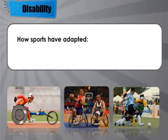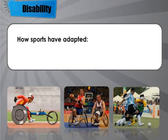Blind football has had its equipment adapted. All players wear blindfolds to ensure a level playing field, so that someone who is only blind in one eye doesn't have an advantage over those blind in both. The ball has a rattle inside it, allowing players to use their hearing to follow the ball and still play a full part in the game.